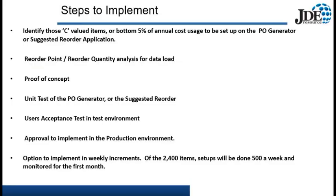So what does it take to implement this? First, you want to identify the items you want to offload onto the PO Generator or Suggested Reorder — typically your lower-end C-level items. Then you'll want to decide which method to use to load the reorder point and reorder quantity: run your analysis and do a manual load, or let the system load it if you have the history. Then you'll do a proof of concept, run unit tests, run user acceptance tests, and move it from the test environment to production after approval. Some companies choose to do it in increments — for example, 500 items per week — to allow purchasing to get up to speed on the learning curve.